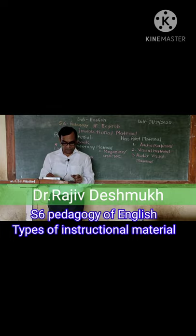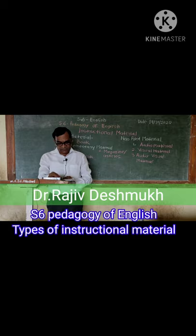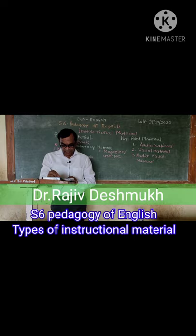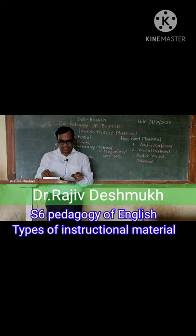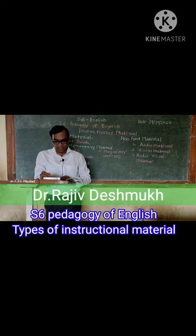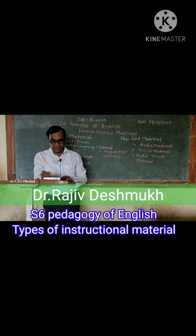Eighth: graphs. A graph is a figure consisting of a line or lines where information is given in a very clear, detailed manner. Graphs are also useful to present information in a systematic way. Ninth: maps and globe. Maps and globes are very useful to show the location of places, rivers, mountains, railway lines, various continents, countries, big cities, and the world. These are very essential in geography teaching.